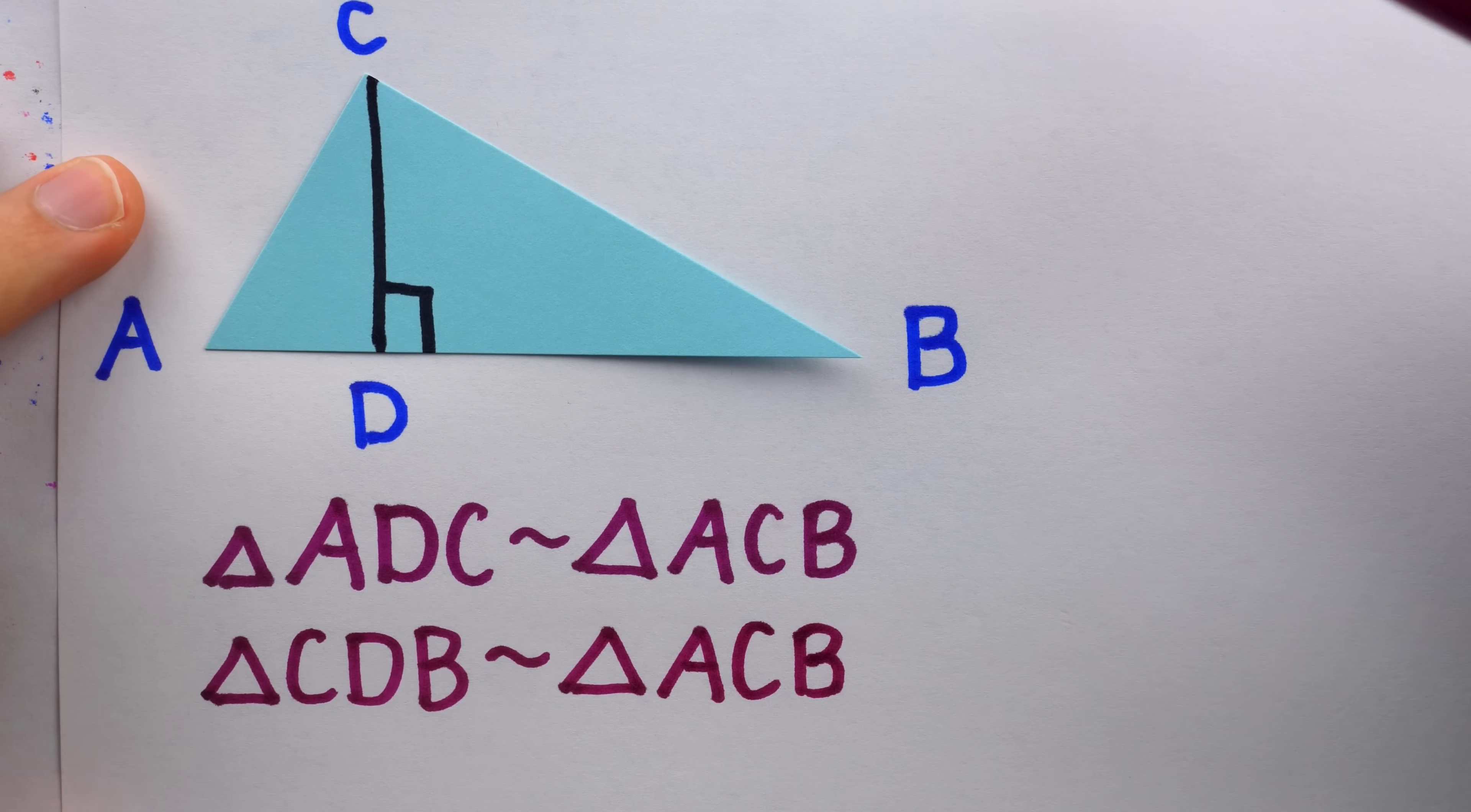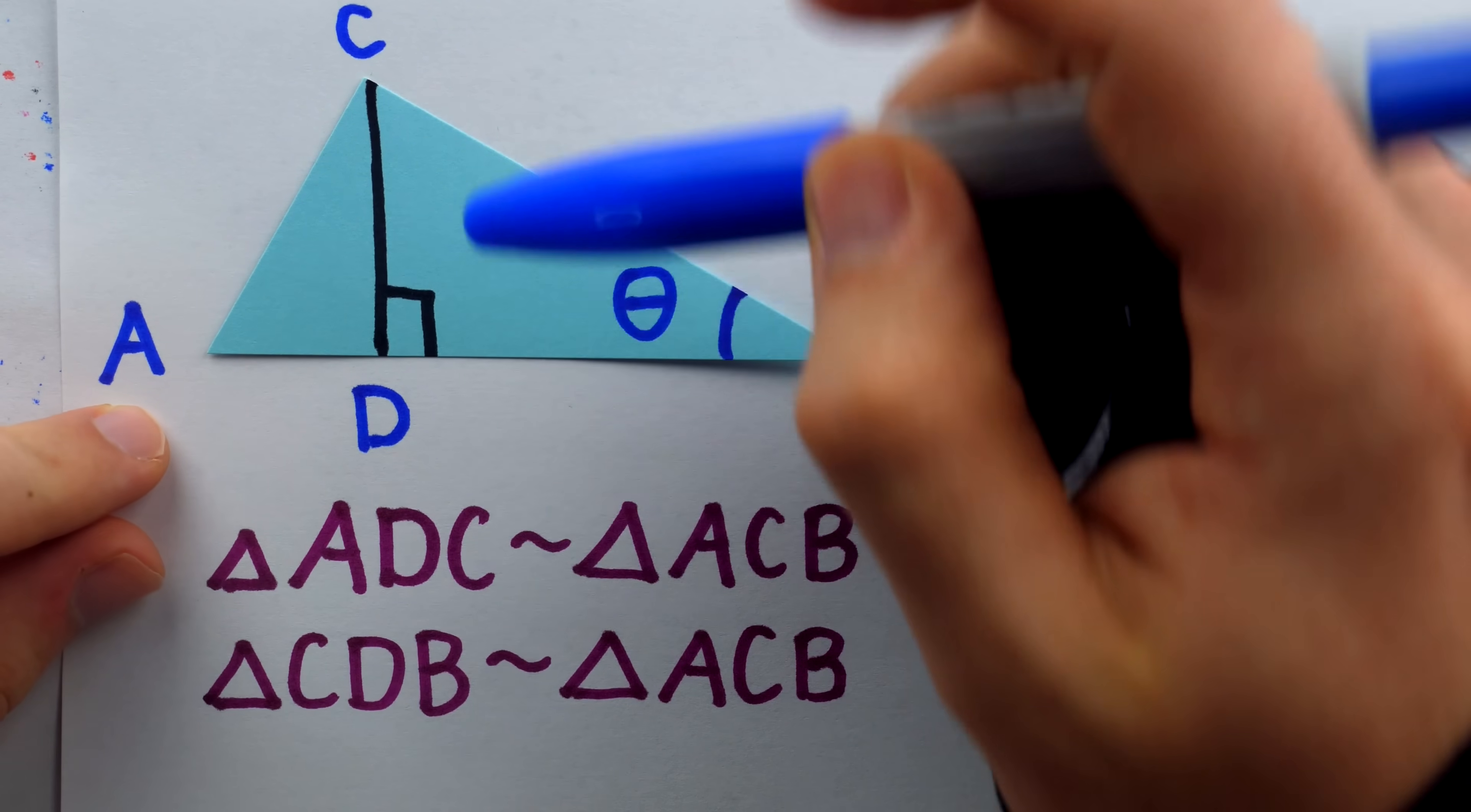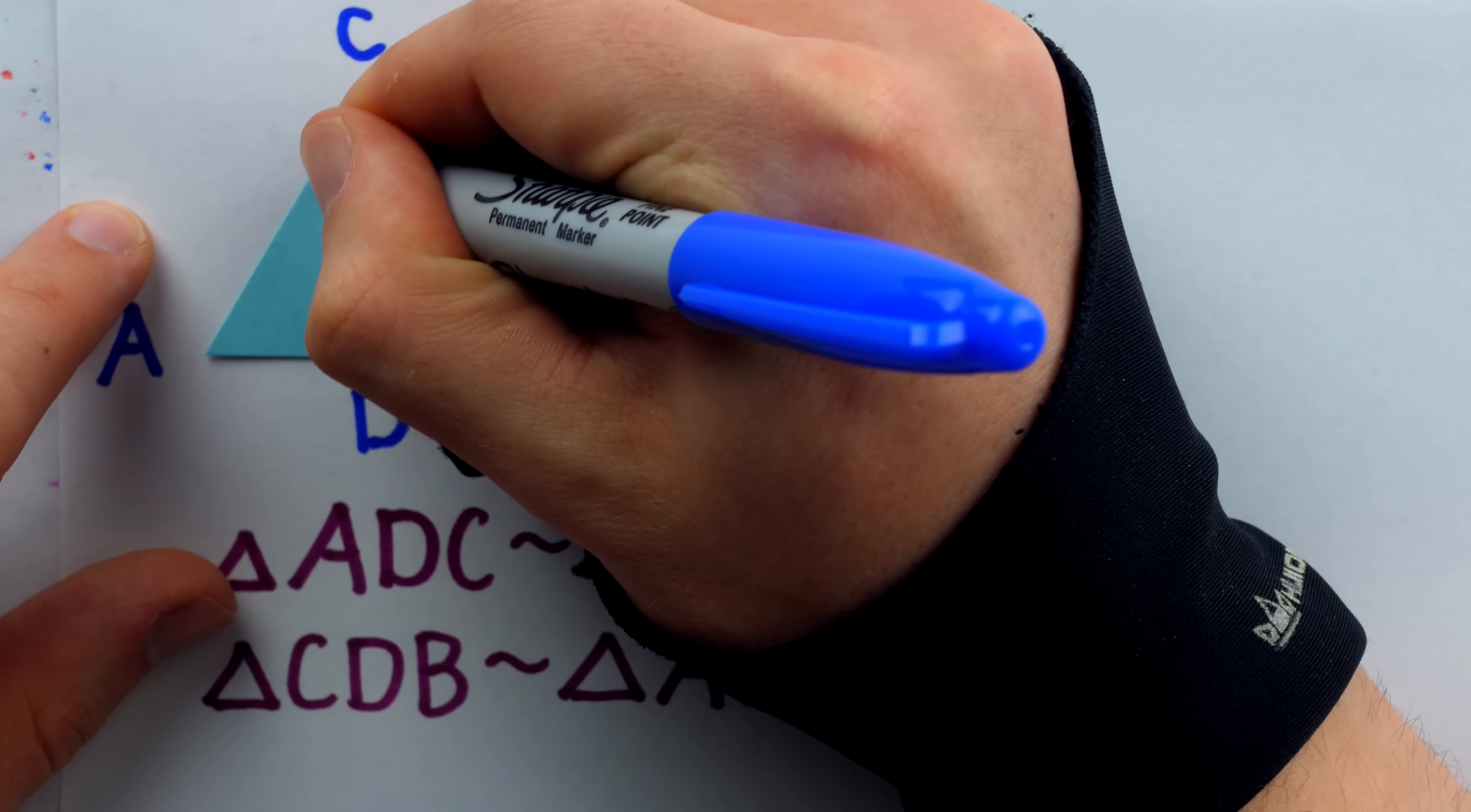Now, the other similarity relationship is that this right triangle, CDB, is congruent to, again, the big right triangle, ACB. Again, we know this because of angle relationships, and it will be helpful for us to name one of these angles. Let's call this angle at vertex B, theta. Then, look at this. In the big triangle, we have that this 90 degree angle, plus theta, plus angle A, well, of course, that's 180 degrees. But in this small right triangle, we also have a right angle and angle A, which means that this missing angle, to add up to 180, must also be theta.